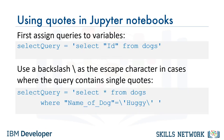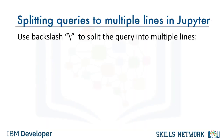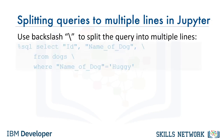What if you need to specify single quotes within the query, for example to specify a value in the WHERE clause? In this case, you can use backslash as the escape character, as follows: select_query = 'SELECT * FROM dogs WHERE "name_of_dog" = \'Huggy\''. If you have very long queries such as join queries or nested queries, it may be useful to split the query into multiple lines for improved readability. In Python notebooks, you can use the backslash character to indicate continuation to the next row.